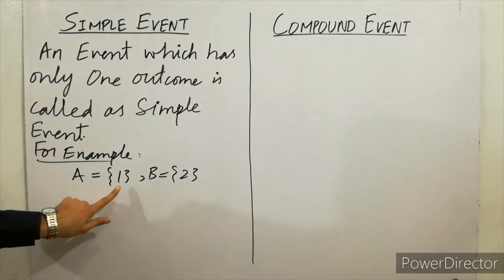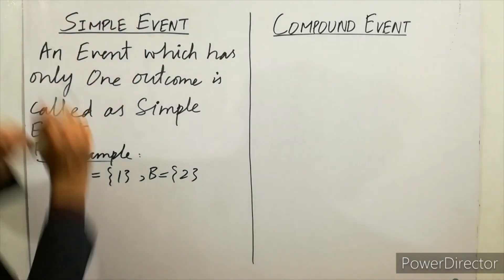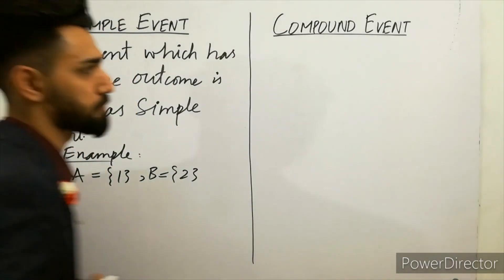So that event has only one outcome. So A and B are called as simple events. Must remember.